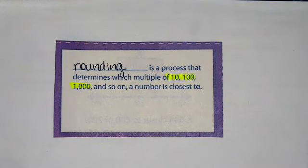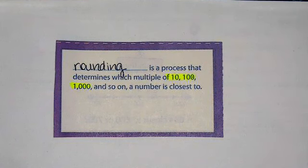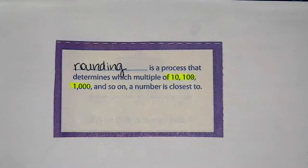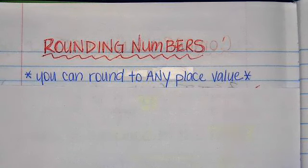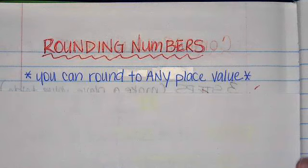It's really important to know that when you're rounding, your number is always going to end in zero. It's also important to notice that when you're rounding numbers, you can round to any place value.